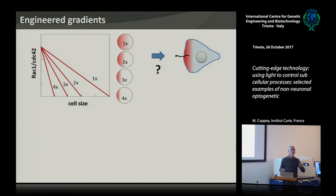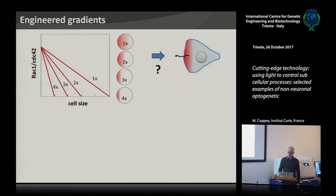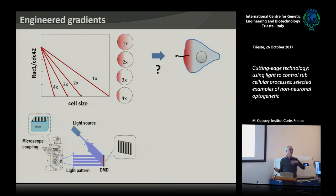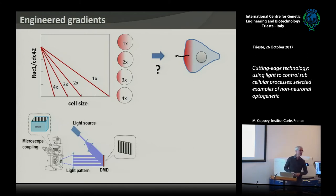If I impose something very sharp versus very shallow, how does that affect the migrating properties of the cell? To make these gradients, we used a DMD device — a very cheap solution, exactly like this video projector: an array of micromirrors that flip between two positions, either reflecting light or not, and you get grey-scale levels of activation by controlling the frequency of flipping. You plug this into the microscope, and you can shine any pattern of light.